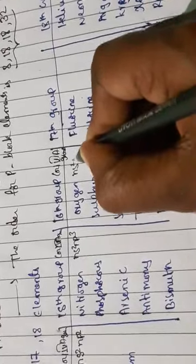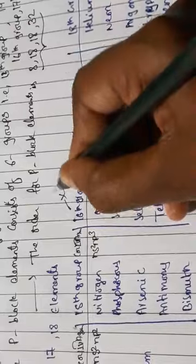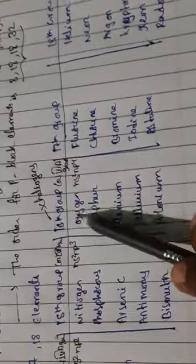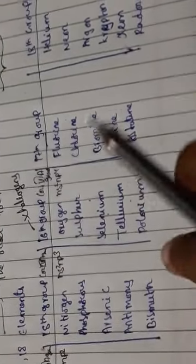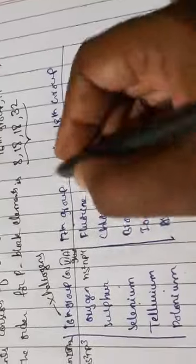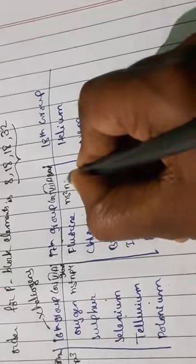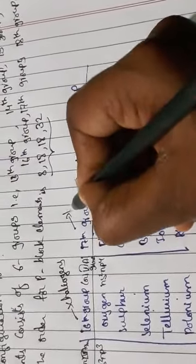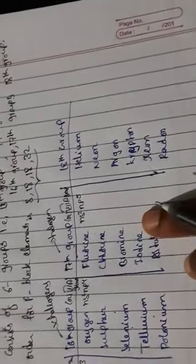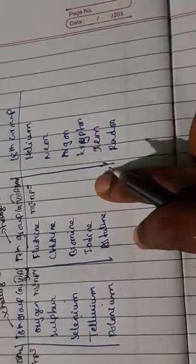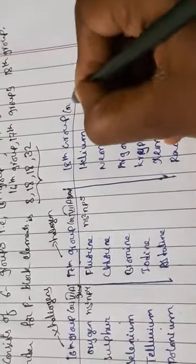The 16th group, or 6A group elements, has the general electronic configuration ns² np⁴. This is also called chalcogens or the oxygen family. The elements are oxygen, sulfur, selenium, tellurium, and polonium. The 17th group, or 7A group, has configuration ns² np⁵ and is called the halogen family. Its elements are fluorine, chlorine, bromine, iodine, and astatine.